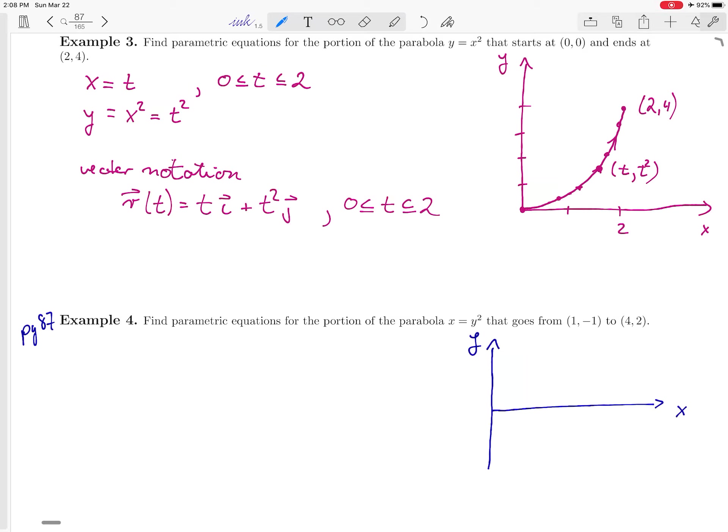I have a sideways parabola and I'm asked to find the parametric equations for the portion of the parabola between 1, minus 1 and 4, 2.